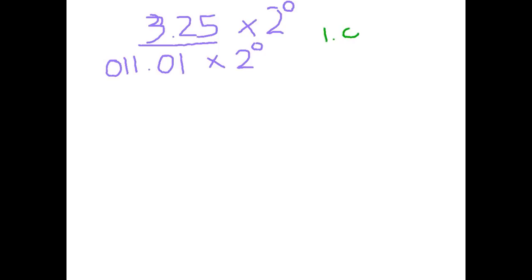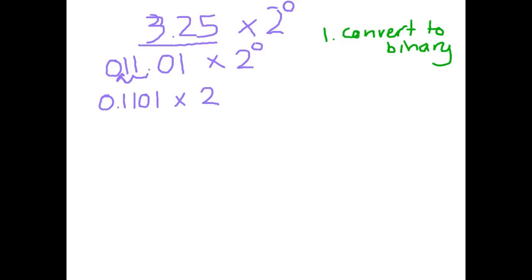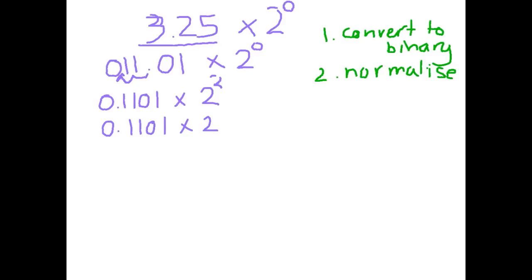Step 1 is convert to binary. Step 2 is normalize the mantissa — get rid of any significant digits on the left of the decimal point by moving it. We move it two spots to the left, ending up with 0.1101 times 2 to the power of 2, since left means adding. Step 3 is convert the exponent. We have a positive 2, and positive 2 in binary is 010.